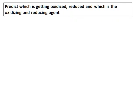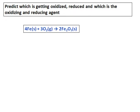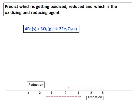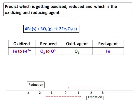One more example: identify what is getting oxidized and reduced, and find out the oxidizing and reducing agent. The equation given is iron plus oxygen giving Fe2O3. Fe is becoming Fe3+ — the oxidation state goes from 0 to positive 3 — and therefore it is getting oxidized. O2 is becoming O2− and hence it is getting reduced, because the number is going from 0 to negative 2. Oxygen will be the oxidizing agent and Fe will be the reducing agent. Be careful — you have to choose the oxidizing and reducing agent from the reactant side only, not the product side. This reaction, where two reactants combine to give one product, we also call a combination redox reaction.